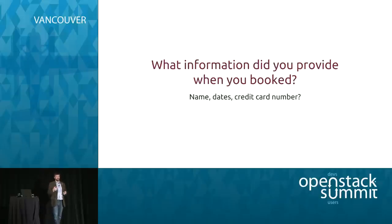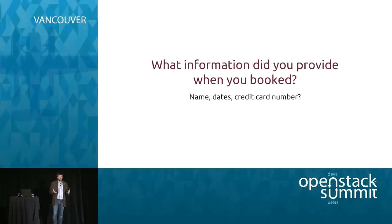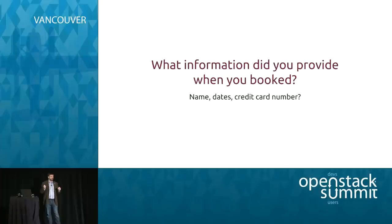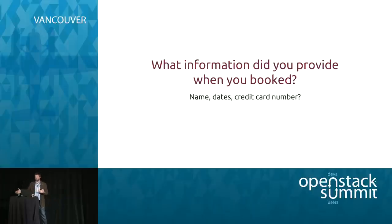Billing information — you had to provide a name, the dates you were going to stay, how long you were going to stay, maybe how many people, and most importantly, a credit card number. But it was just basic information. You didn't have to provide what you're doing in town or what you're doing in that accommodation. That's your own business. You're using that apartment or that hotel as infrastructure.